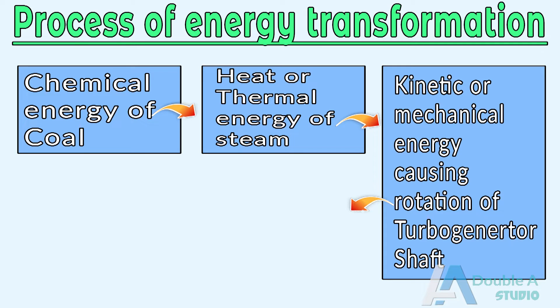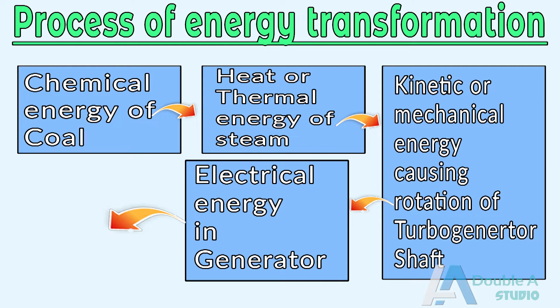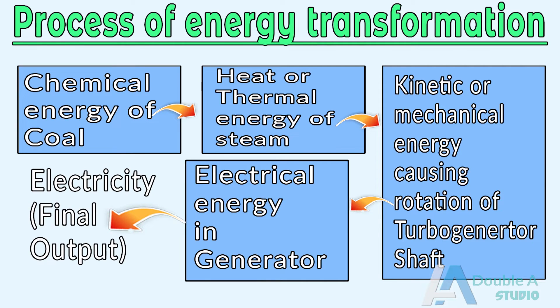Kinetic energy of steam gets converted into rotational or mechanical energy in the turbine, and passes this energy to the generator shaft. Finally, the generator converts mechanical energy into electrical energy. The energy transformation that takes place in this process is represented in the block diagram here.